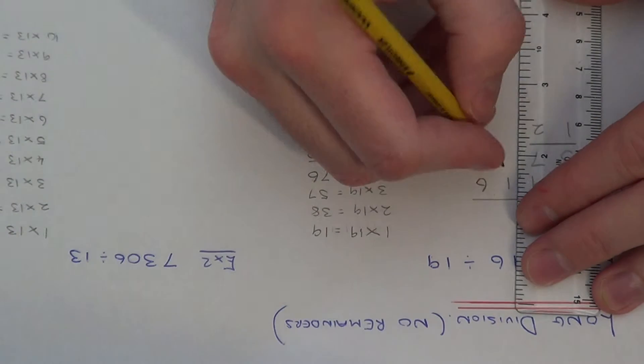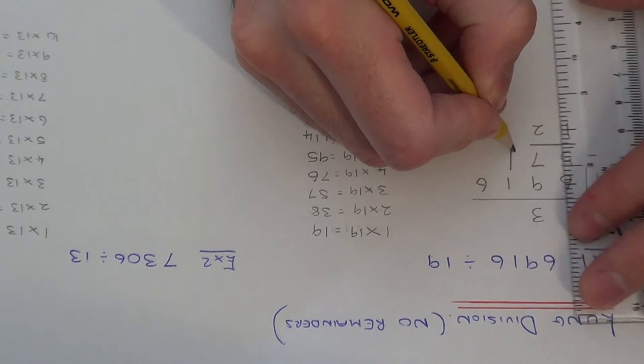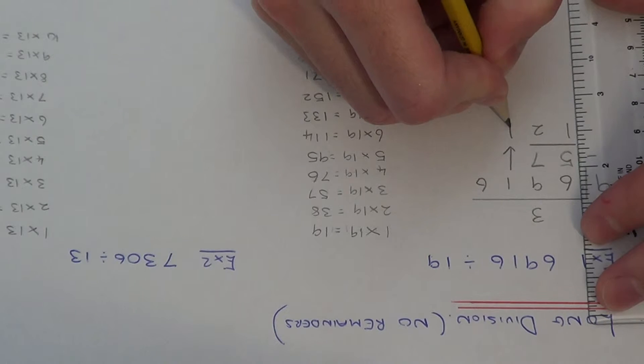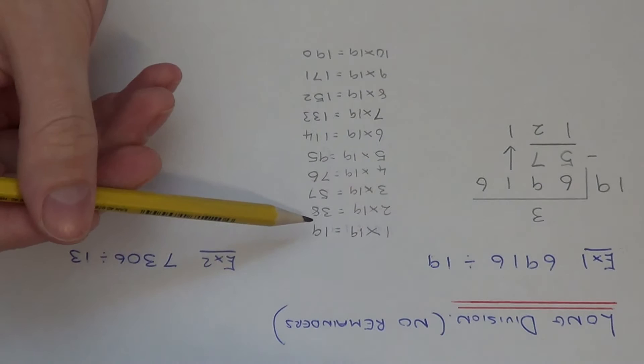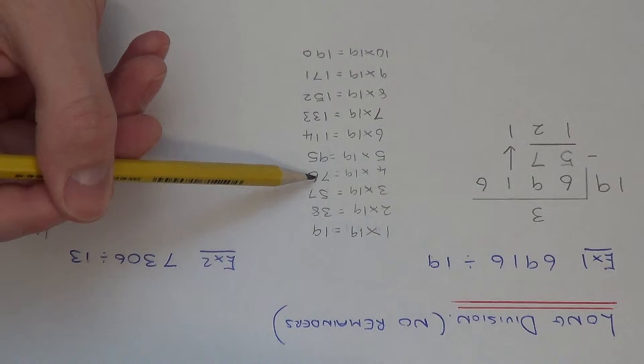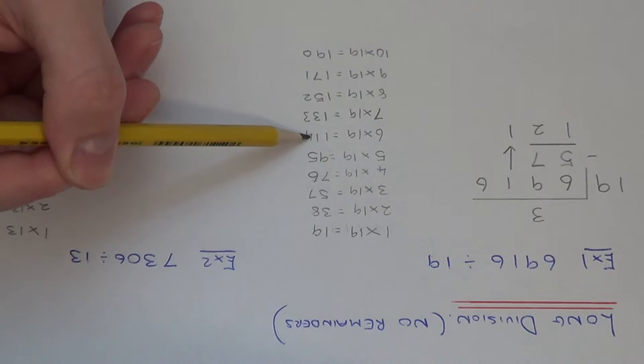Next what you need to do is bring the 1 down to the next line. So what we need to work out now is 121 divided by 19. So again if we look at our multiples of 19 on the side of the page. So what's the best one we can do? So we've got 19, 38, 57, 76, 95, 114, 133, so that's too big. So the best one we can do is 114.